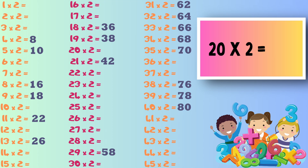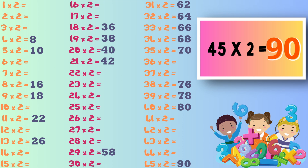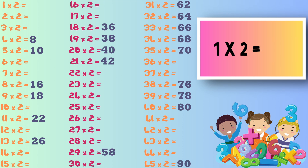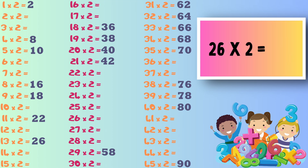Next it's 45 times 2 and the answer to this one is 90. Next up, should be an easy one, it's 1 times 2 and the answer is 2. Next it's 26 times 2 and the answer is 52.